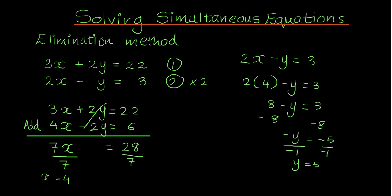Now I need to check whether I've done this right. I know x equals 4 and y equals 5. Checking equation 1: 3 times 4 is 12, and 2 times 5 is 10; 12 plus 10 equals 22 — it works. Checking equation 2: 2 times 4 is 8, minus 5 is 3 — it works. Since both check out, the equations have been solved correctly.